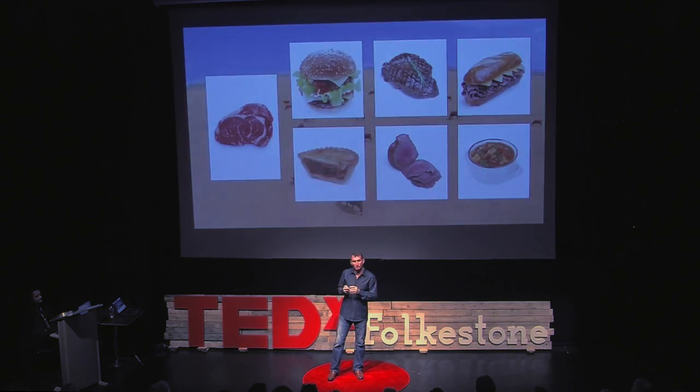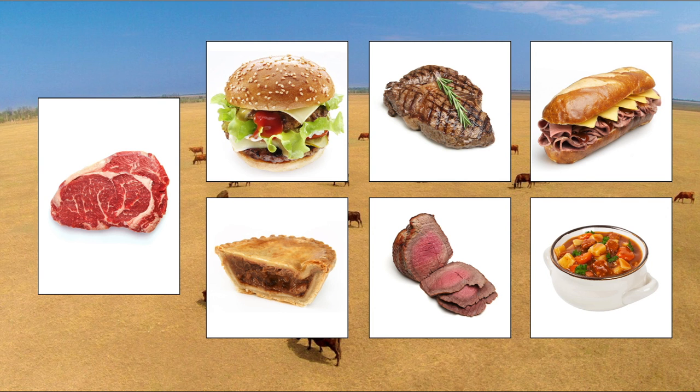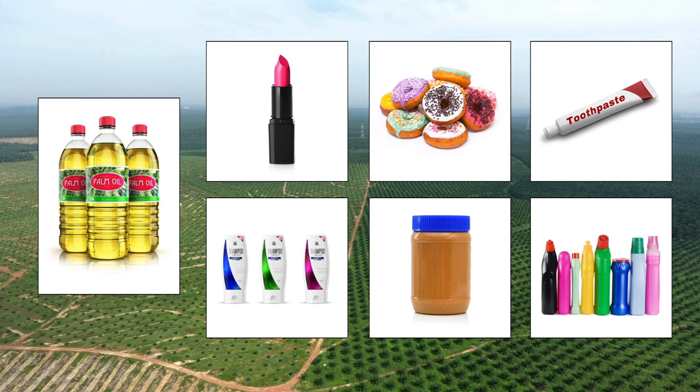So what's the cause of deforestation? Well, we've got four primary driving industries. First, we have the beef industry — forests are being destroyed to make grazing land for beef cattle, and beef can be found in a wide variety of food products. Next, we've got the palm oil industry. Palm oil is the world's leading vegetable oil and can be found in over 50% of household products, in everything ranging from cosmetics to food to detergents.